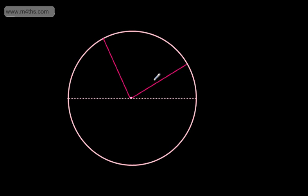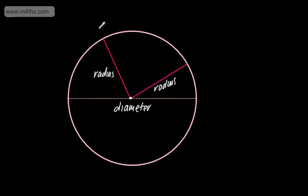Let's go ahead and label these up. Here's my centre. This is a diameter, and then we have the radius — one radius just here and the other just here. I'm going to label this point A and point B just here. The area trapped between this radius and this one is called a sector, so all we've got here is a sector.